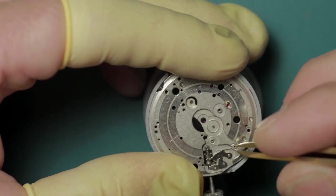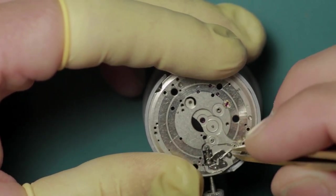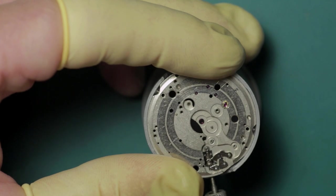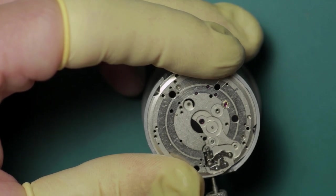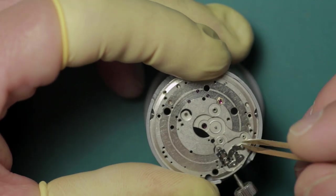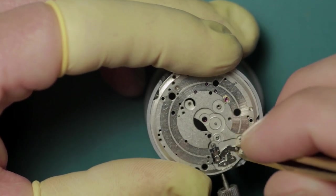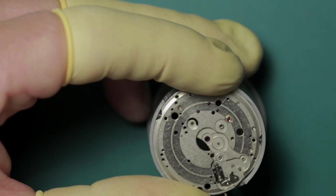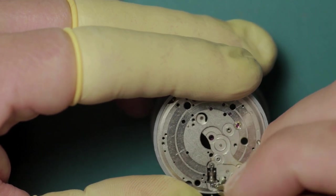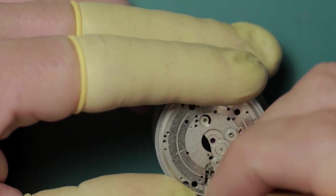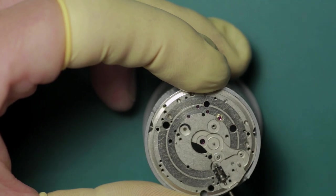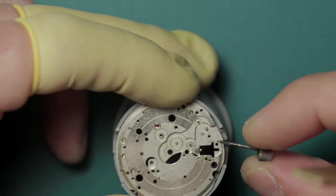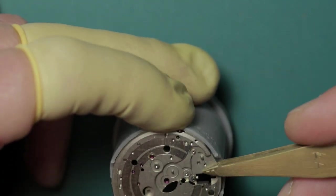The yoke spring is released and lifted away, this is a shepherd's crook type, followed by the yoke and the setting lever. Finally we can draw the stem which will allow the clutch and the winding pinion to drop out.